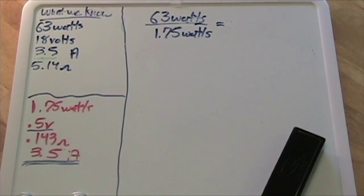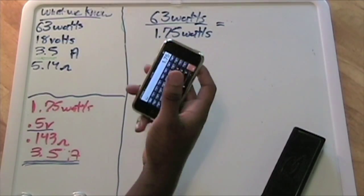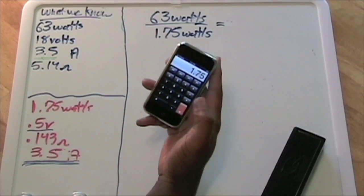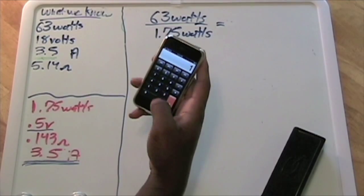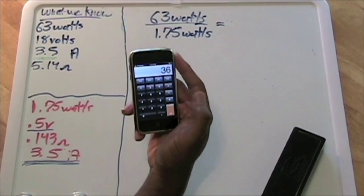So this should tell us how many solar cells we need, and it should be 36. As you know, I built my solar panel which was 63 watts out of 36 solar cells, so 63 divided by 1.75 equals 36, so it checks out.